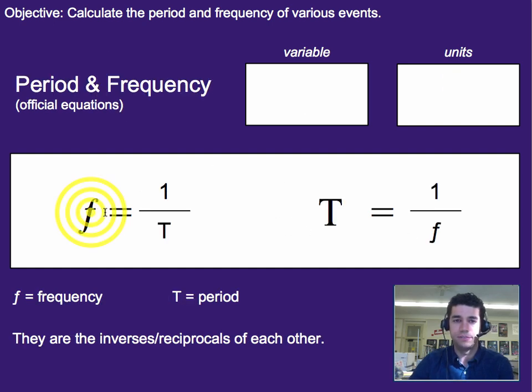Now like I said, they're the inverse of each other, so frequency is just one over the period and period is just one over the frequency. So if you know one of these things, you know them both.